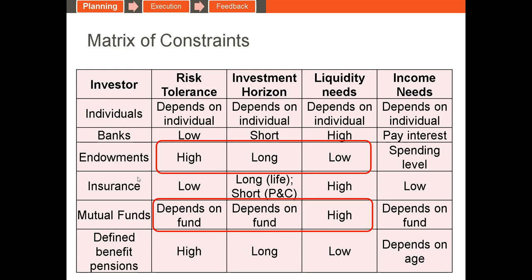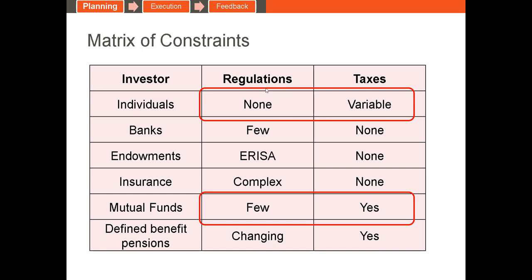Mutual funds have all kinds of requirements depending on the type of investor they're trying to attract. A mutual fund with a capital appreciation objective might have a moderate risk tolerance, a long time horizon, and relatively low liquidity needs. A fund that invests in bonds might have a fairly low risk tolerance. All of these investor classes have different profiles.